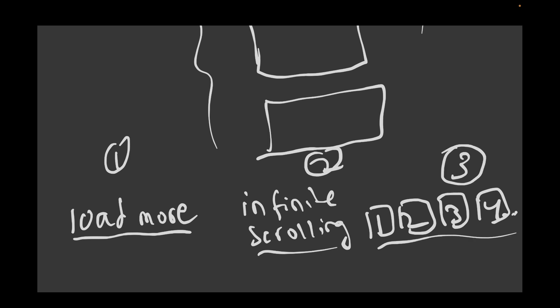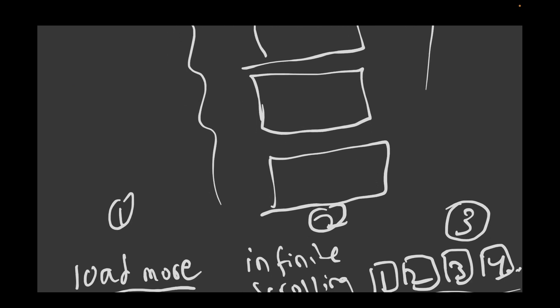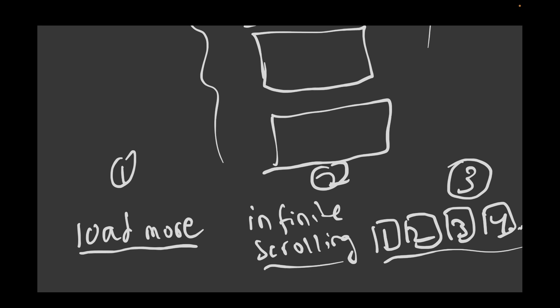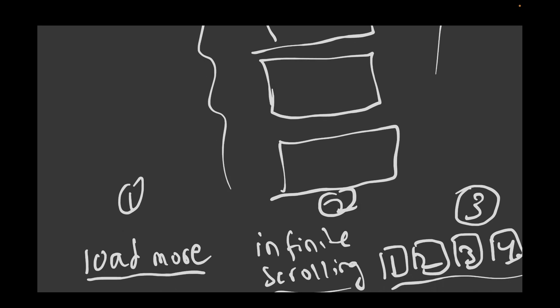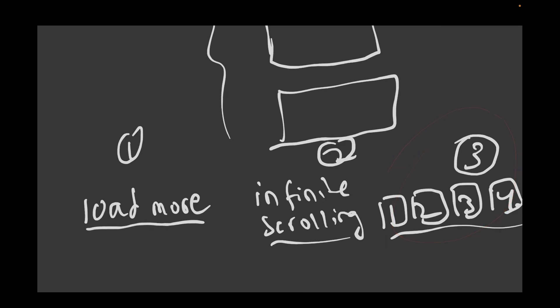Amongst these three types, two can cause SEO issues: load more and infinite scrolling. Before explaining why, let me clarify what they are. Infinite scrolling is where you scroll down and when you hit the bottom of the page, the next set of data automatically loads. With load more, when you scroll down there's a 'load more' button the user clicks to load the next set of data. Page-number pagination just has numbered pages you can click to navigate directly.